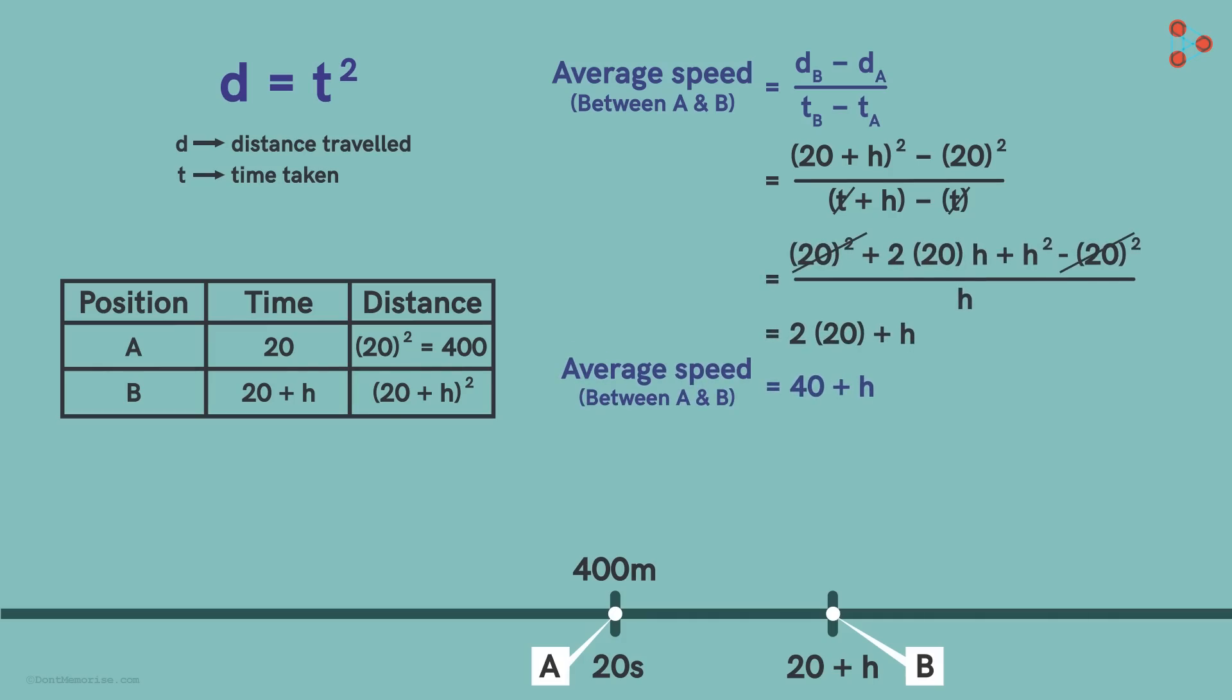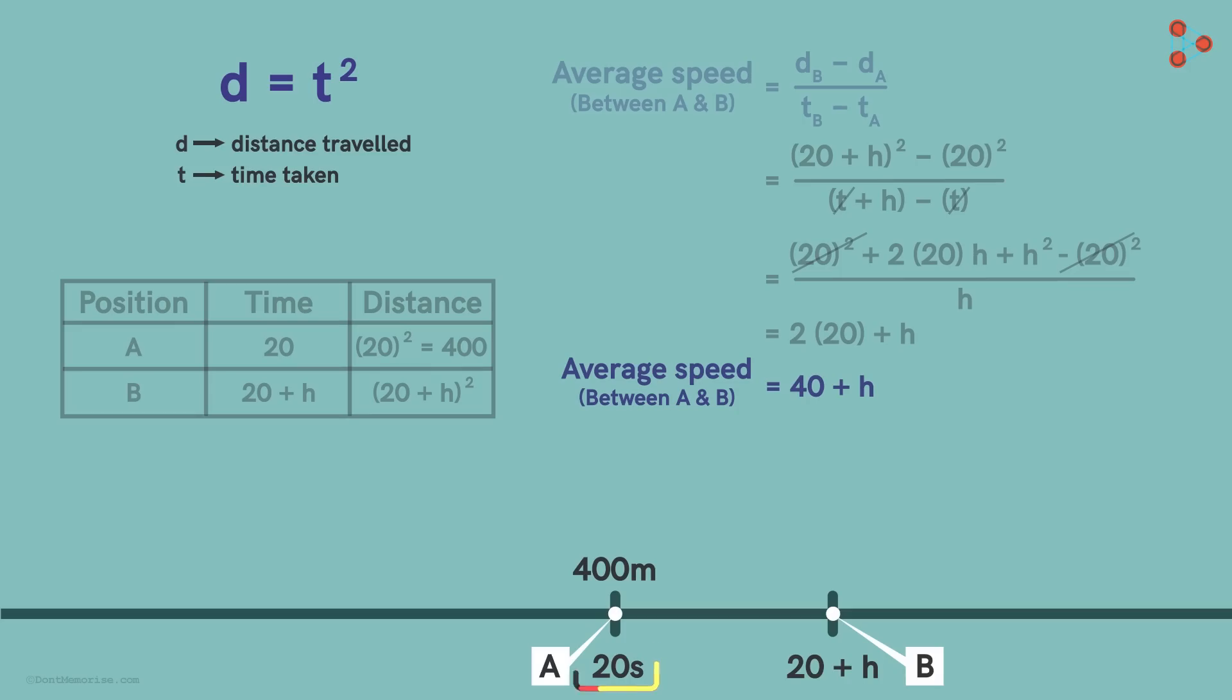So now I guess you realize what this relation has achieved for us. h here signifies some duration of time after t equal to 20 seconds. As we consider smaller values of h, that means we are calculating the average speed between smaller and smaller time intervals.